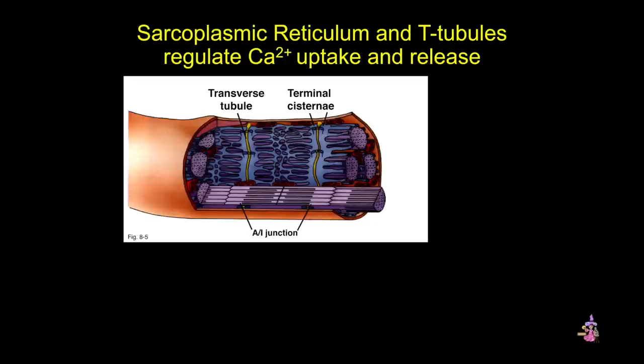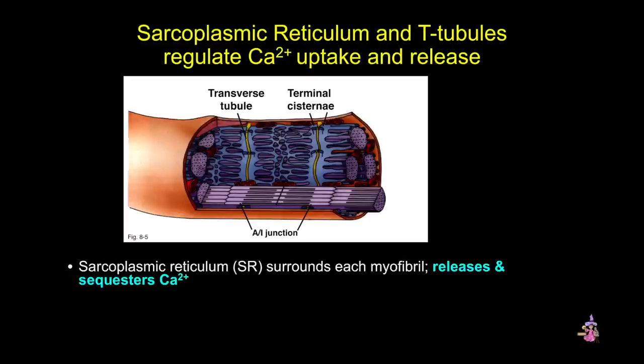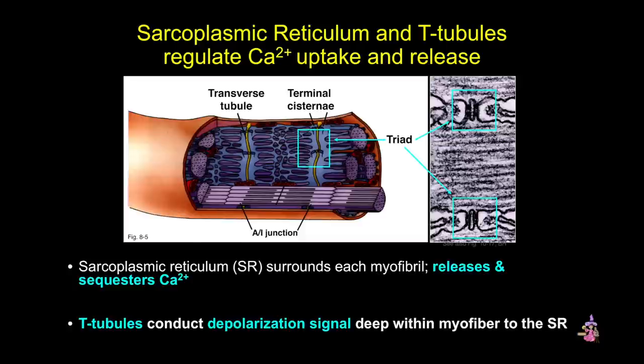We'll now briefly review the structure of the sarcoplasmic reticulum and the regulation of calcium uptake and release. The sarcoplasmic reticulum is the network that surrounds the myofibrils and releases and sequesters calcium. When the muscle cell is depolarized, that depolarization signal is conducted by the T-tubules — extensions of the sarcolemma that penetrate deep into the fiber. The depolarization signal then signals the sarcoplasmic reticulum to release stored calcium. That rise in calcium allows it to bind to troponin, exposing the myosin binding site on actin. For more details on the physiology, consult your Guyton and Hall medical physiology textbook.